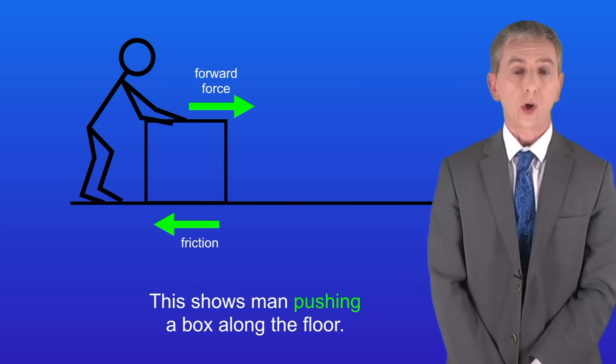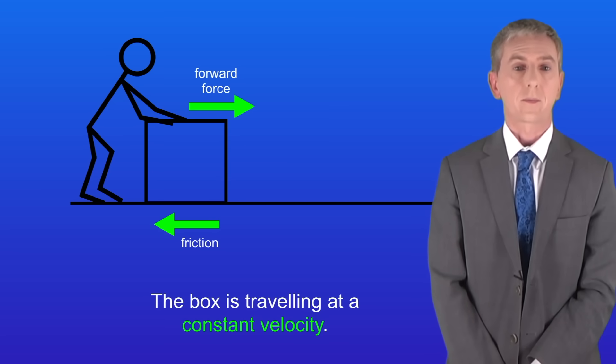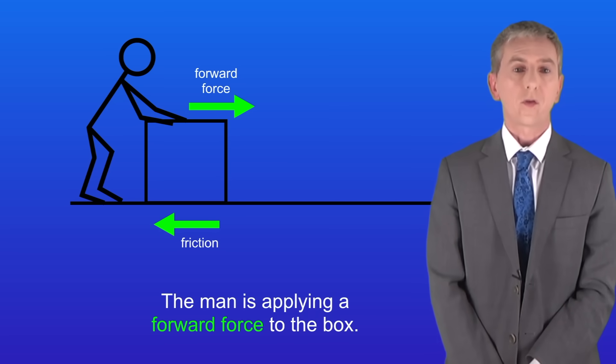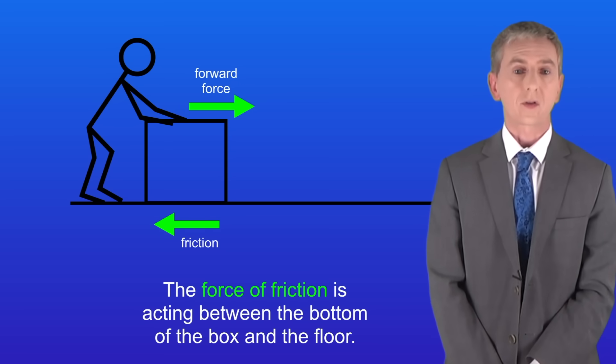I'm showing you here a man pushing a box along the floor. The box is traveling at a constant velocity. The man's applying a forward force to the box but the force of friction is acting between the bottom of the box and the floor.